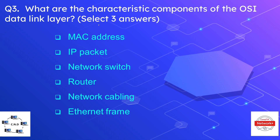Question number three is: what are the characteristic components of the OSI data link layer? Data link layer is also known as layer two. We have to select three answers and the options are MAC address, IP packet, network switch, router, network cabling, and ethernet frame.